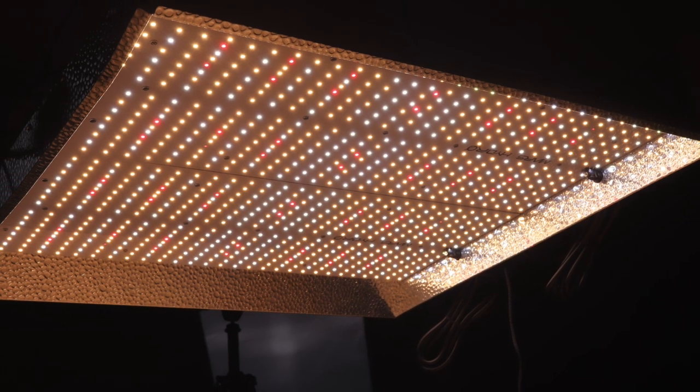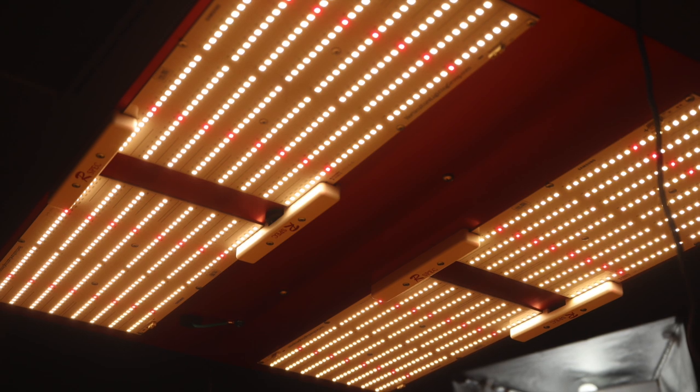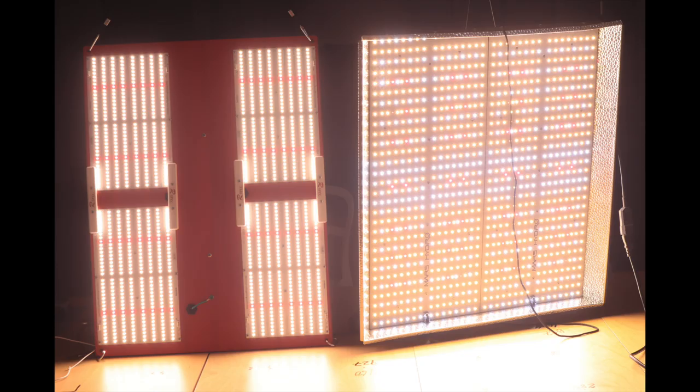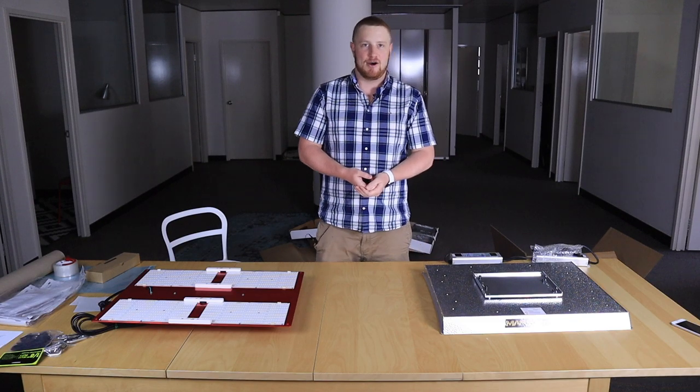Hello everybody! I will be comparing the MAS TS 3000 to the HLG 550 red spec grow light. Both are made for 5x5 space and one costs only half of what the other costs.